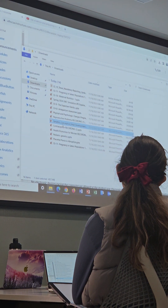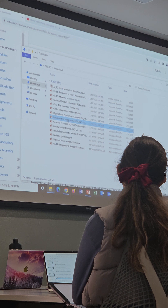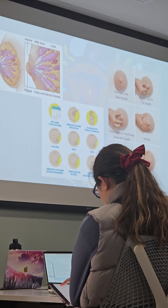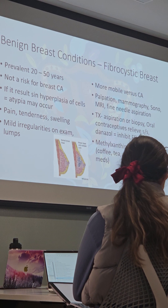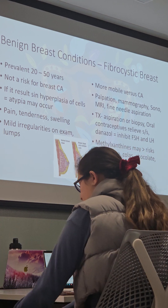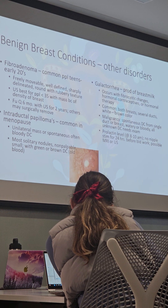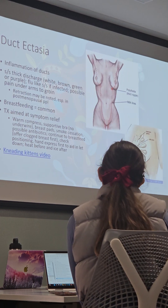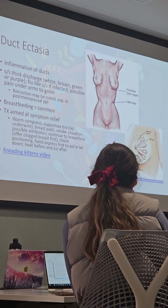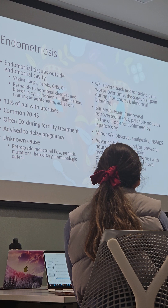Going on to chapter five — reproductive problems. Definitely know the signs and symptoms of the nine breast conditions and treatment for those. Also know galactorrhea: signs and symptoms, how we would test for it, and the teaching around it. For all these breast conditions — the benign ones, duct ectasia, and all of those — know the signs and symptoms, teaching, and interventions.